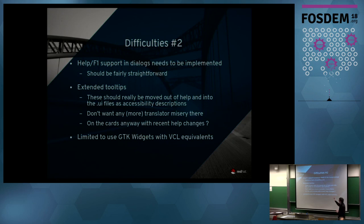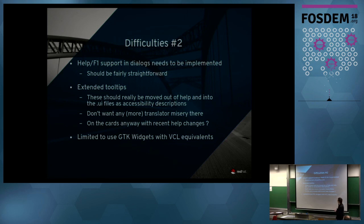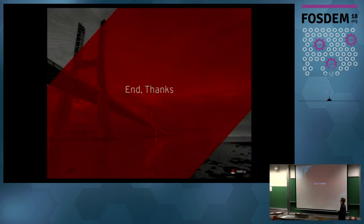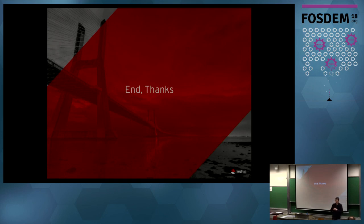We'll need some support to tunnel dialogs through, and one thing we probably need to do is move extended tips out of Help and into the .ui files — we've wanted to do this for ages. Translators have been through a lot of pain so I don't want to cause more, but it may happen anyway with help changes. If we stick with the model of needing a fallback, we're limited to GTK widgets that exist as equivalents to our VCL widgets. We'd have to remain within that subset unless we went all the way to using GTK on all platforms and got rid of our own toolkit entirely, but for now I'm limiting it to what we already support. Thank you.